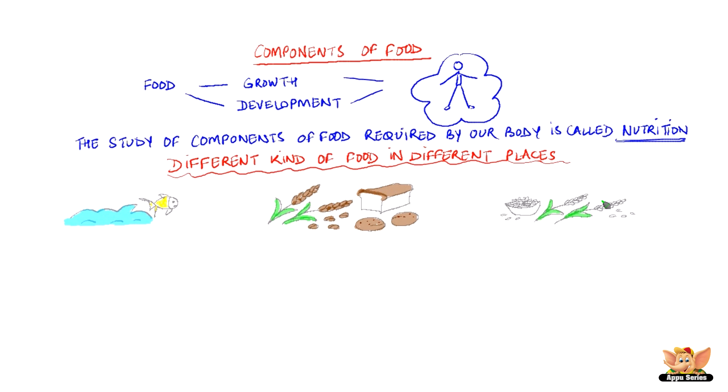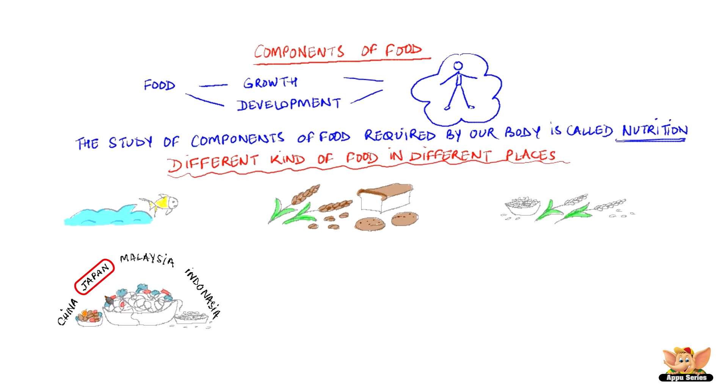So shall we look at what kind of food people eat in different places around the world? People in Asian countries like China, Japan, Malaysia, and Indonesia have noodles and rice as their main staple food. They eat it with vegetables, meat and soup.